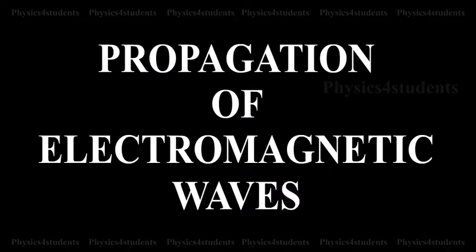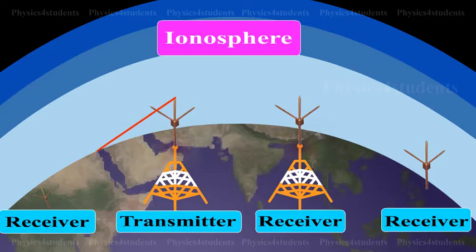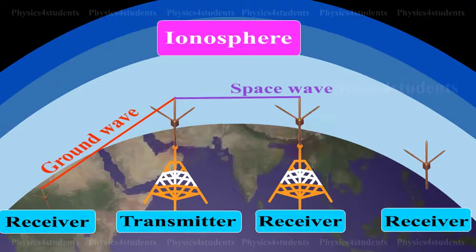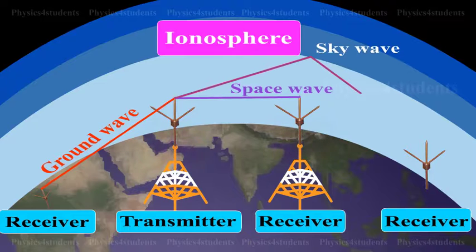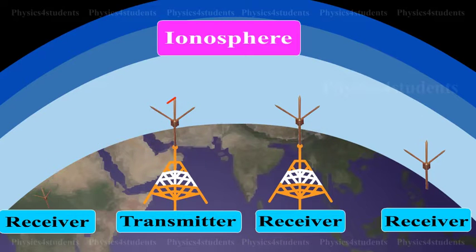Propagation of electromagnetic waves. The propagation of electromagnetic waves depends on the properties of the waves and the environment. Radio waves ordinarily travel in straight lines, except where the earth and its atmosphere alter their path.